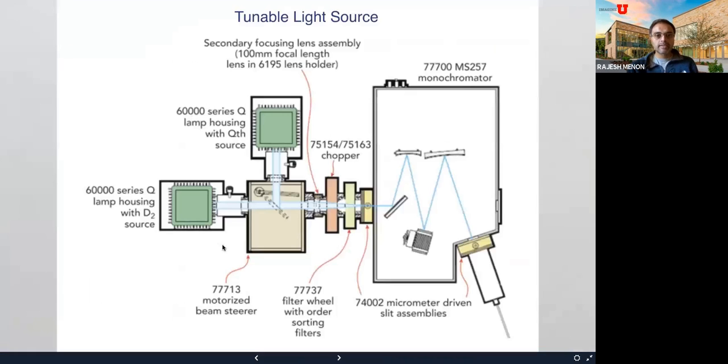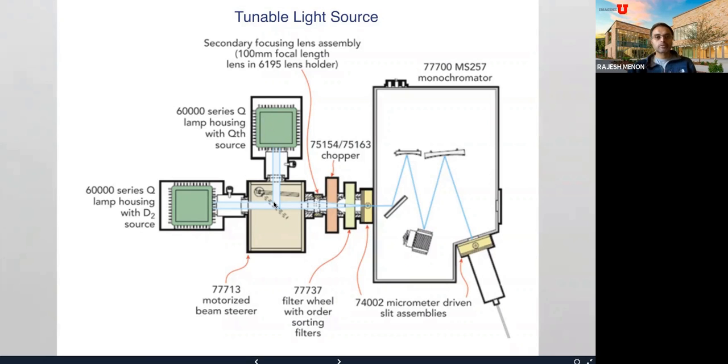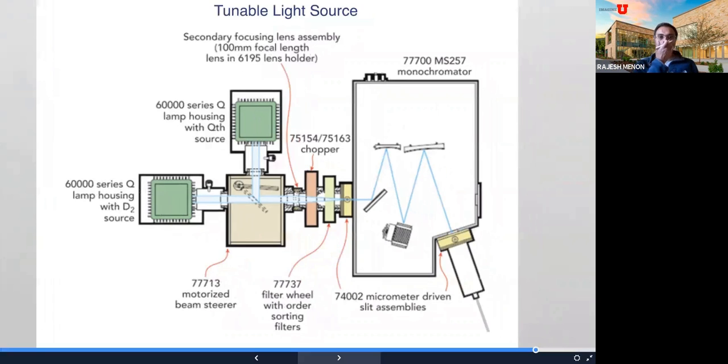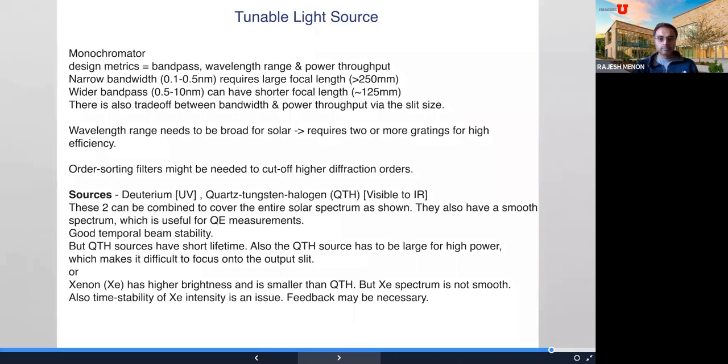I just want to point out, this is a setup used to do quantum efficiency measurements. One thing to point out, there are two sources here. So there's a deuterium source, a hydrogen isotope source, and there's a tungsten source here. So you're using two sources to get the different parts of the solar spectrum, simulating them. The other things to keep in mind, there's a chopper here, which is used with a lock-in amplifier to do very precise measurements. And the rest of the stuff is related to the spectral separation, because you're trying to do one wavelength at a time, and that requires something called a monochromator. But the details of these designs are out of the scope of this discussion, so I'm not going to dwell on it.